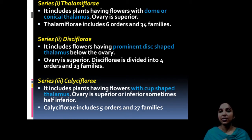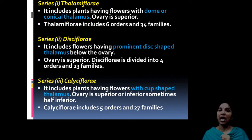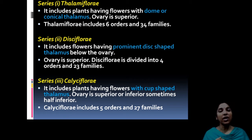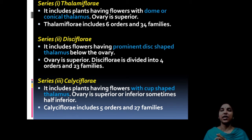To summarize the three series under Polypetalae: Thalamiflorae has a corn-shaped thalamus with a superior ovary; Disciflorae has a disc-shaped thalamus with a superior ovary; and Calyciflorae has a cup-shaped thalamus where we cannot say the ovary is strictly superior or inferior.